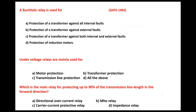Buchholz relay is for protection of transformer against internal faults only — it only protects against internal faults. Undervoltage relays are mainly used for transformer, transmission line, and motor protection. All of the above is the right option. Undervoltage relays are mainly used for all the equipment.